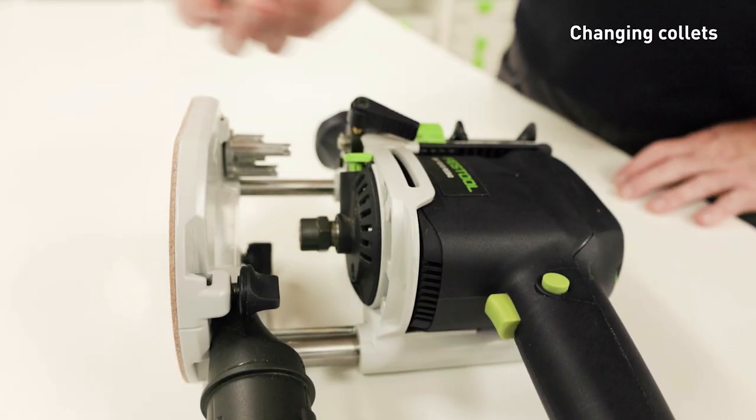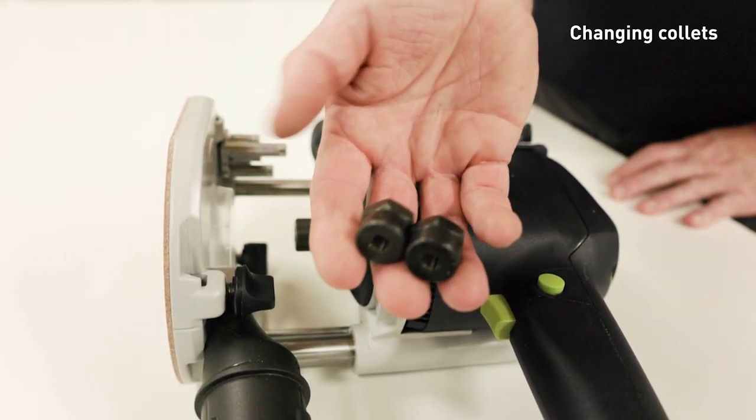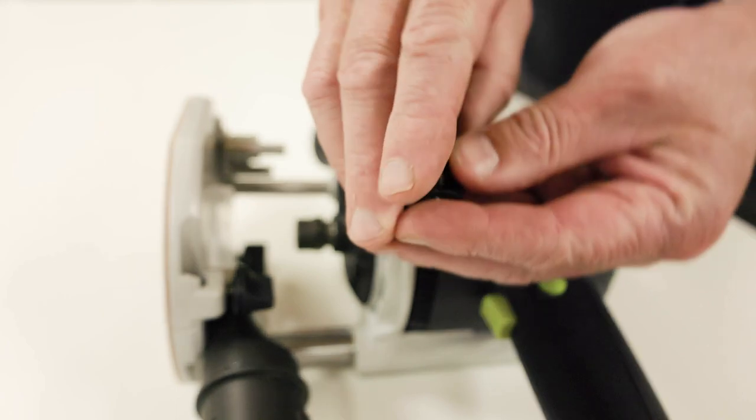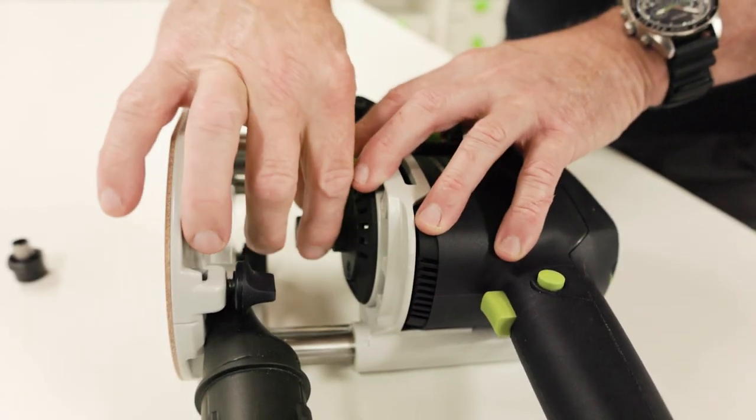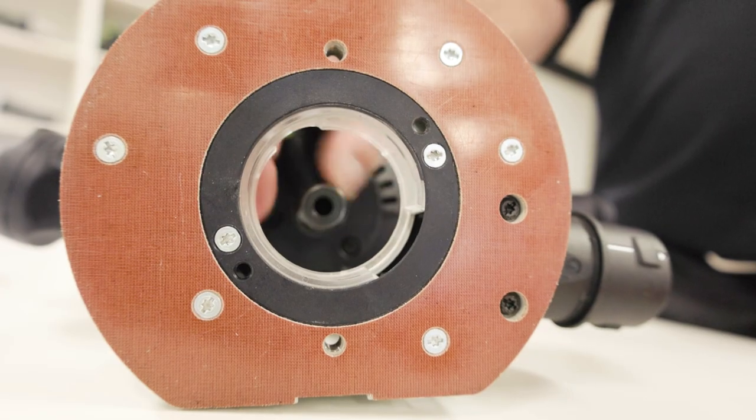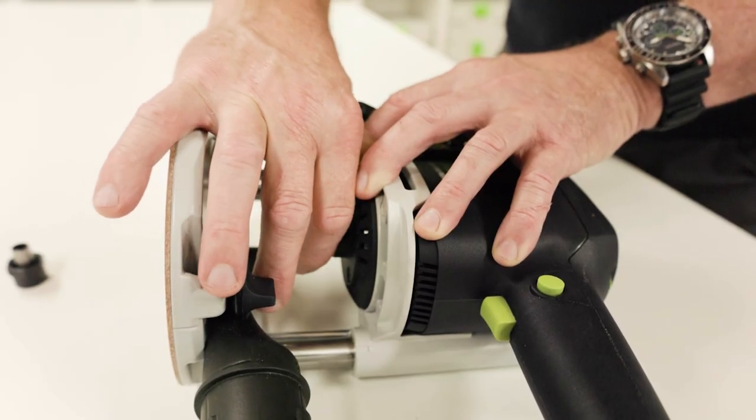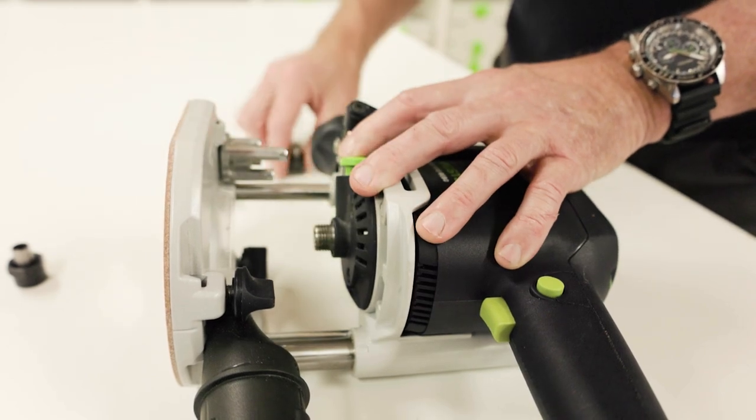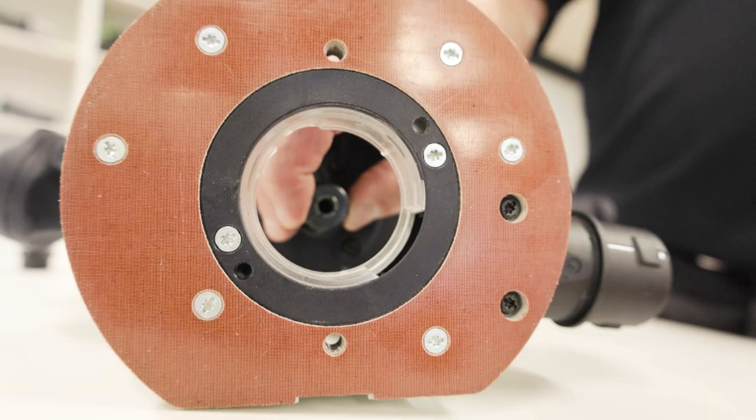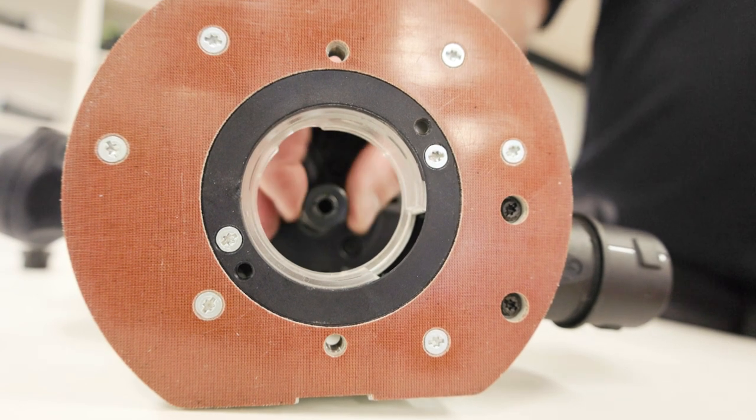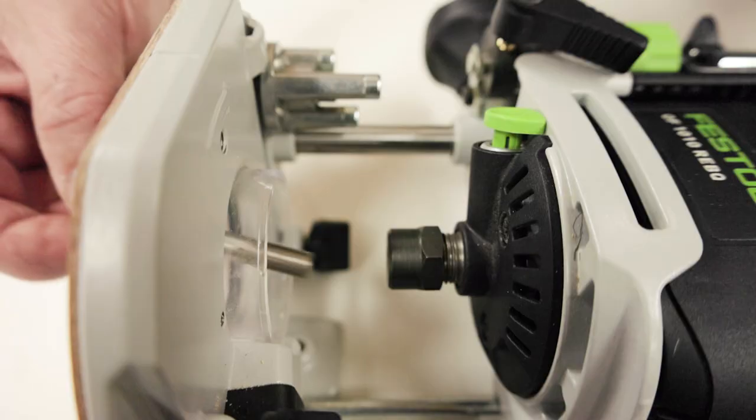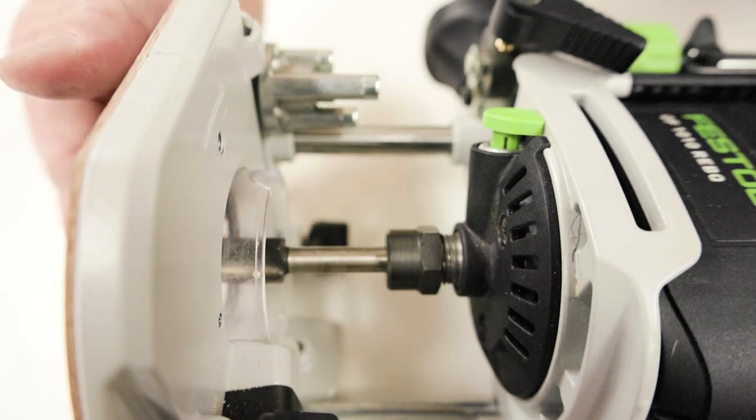The OF-1010R can accept collets 6, 6.35 and 8mm. To change the collets, fully unscrew the collet nut and remove from the spindle together with the clamping collet. Insert a new clamping collet with the nut in the spindle and slightly tighten the collet nut. Do not tighten the collet until the milling cutter has been fitted.